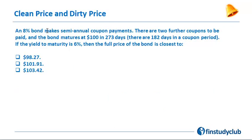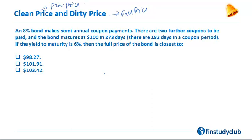Let's now talk about clean price and dirty price. Dirty price is also known as the full price, and clean price is also known as the flat price. Here we have an 8% coupon bond making semi-annual coupon payments. There are two further coupons to be paid and the bond matures at $100 in 273 days.